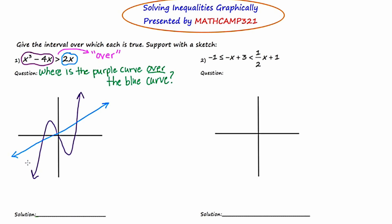Wherever these two graphs cross, I'm going to decide whether to make open or closed circles, and I decide that by looking at the inequality itself. Notice there is no equal sign, which means I'm going to exclude any boundary. There are three boundaries, and I'm going to exclude them all, so I'm going to make them open circles.